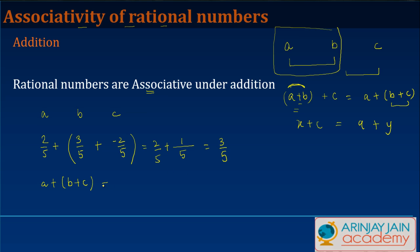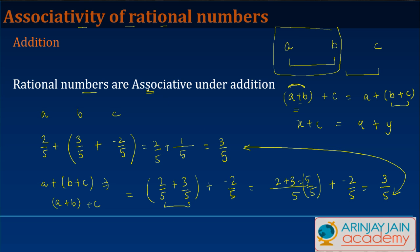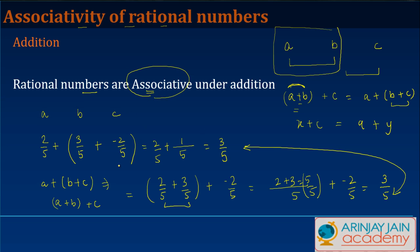That gives us 3/5. Now for the second grouping, a + (b + c): 2/5 + (3/5 + (−2/5)). The LCM is 5, so b + c = (2 + 3)/5 = 5/5, then 2/5 + (−2/5)... solving this gives 3/5. In both cases the answer is the same, so rational numbers are associative under addition.